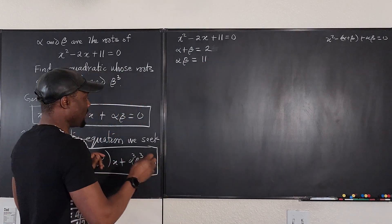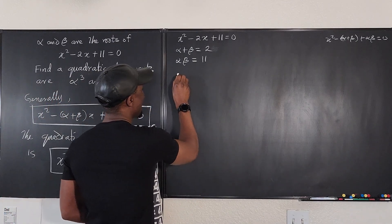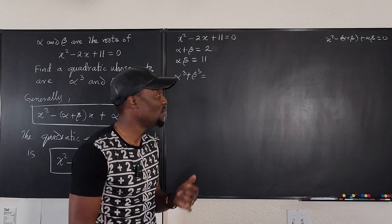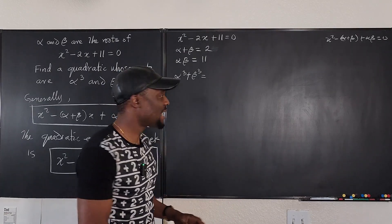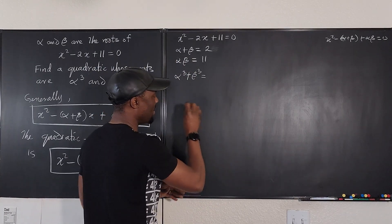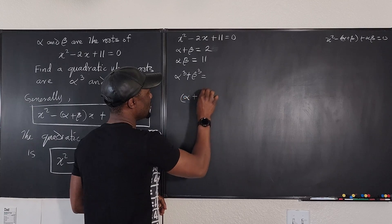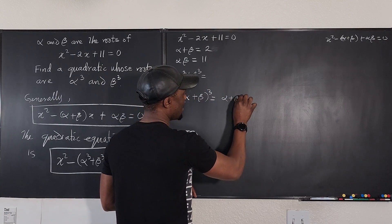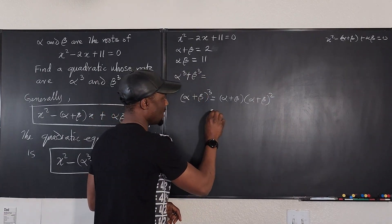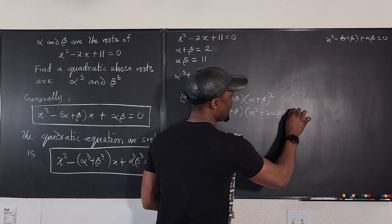We need to know what alpha cubed plus beta cubed is. I don't know what alpha or beta individually are, so I can't compute alpha cubed plus beta cubed directly, but I do know alpha plus beta. What if I cube that? Let's see: alpha plus beta, cubed, equals alpha plus beta times (alpha plus beta) squared, which is the same as alpha plus beta times (alpha squared plus 2 alpha beta plus beta squared).